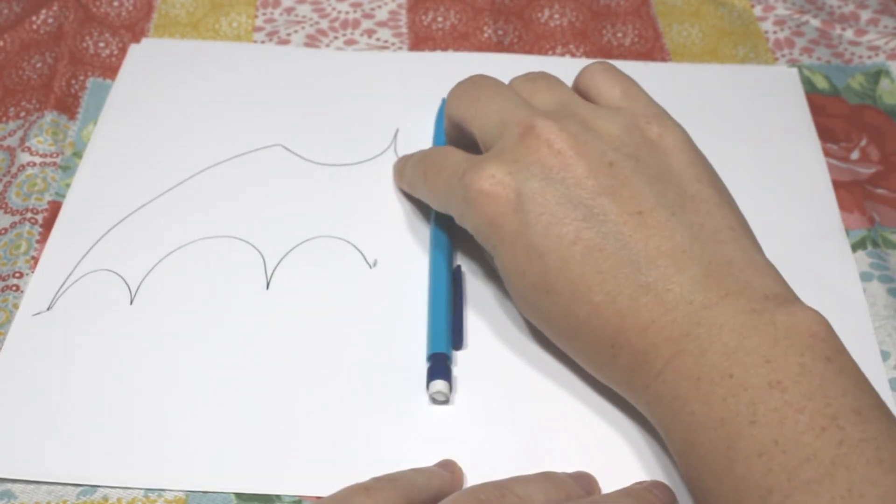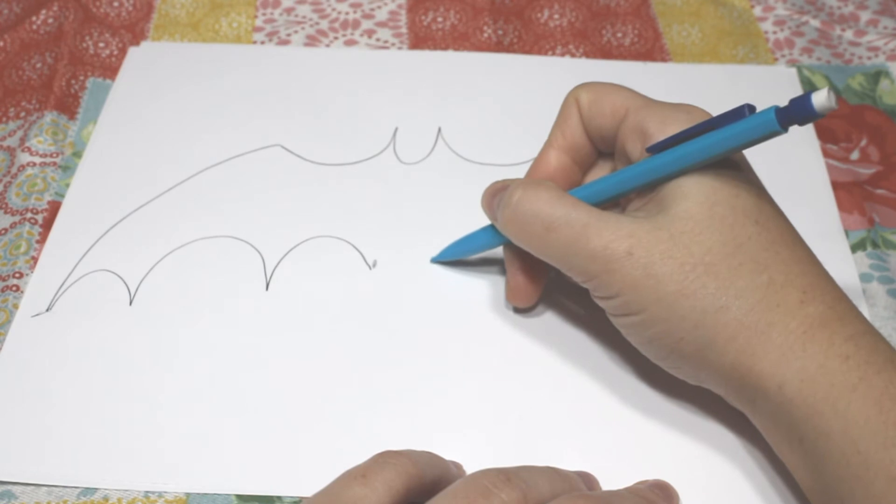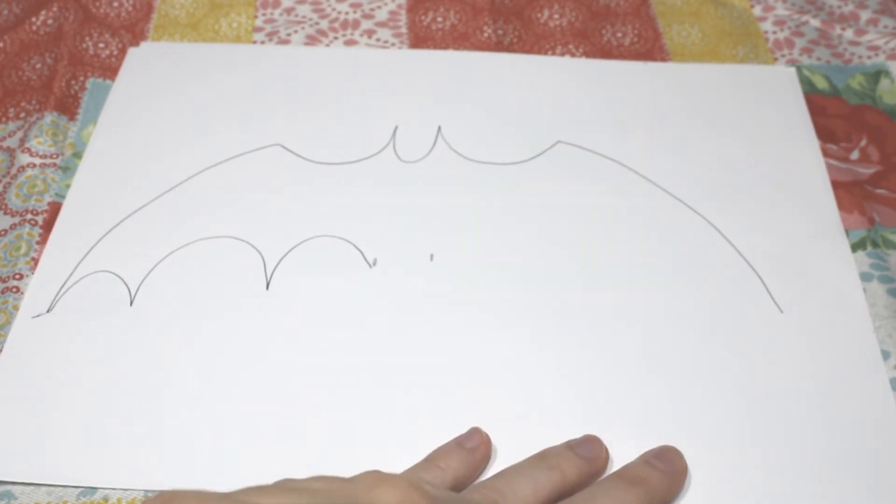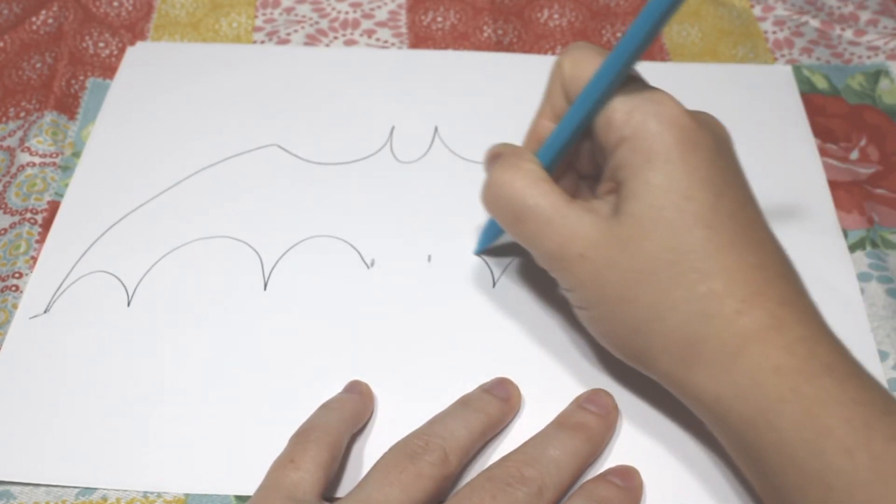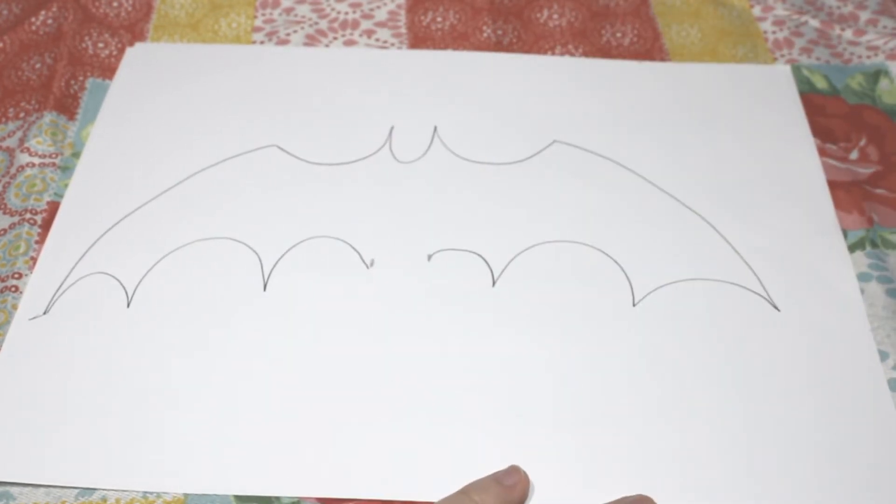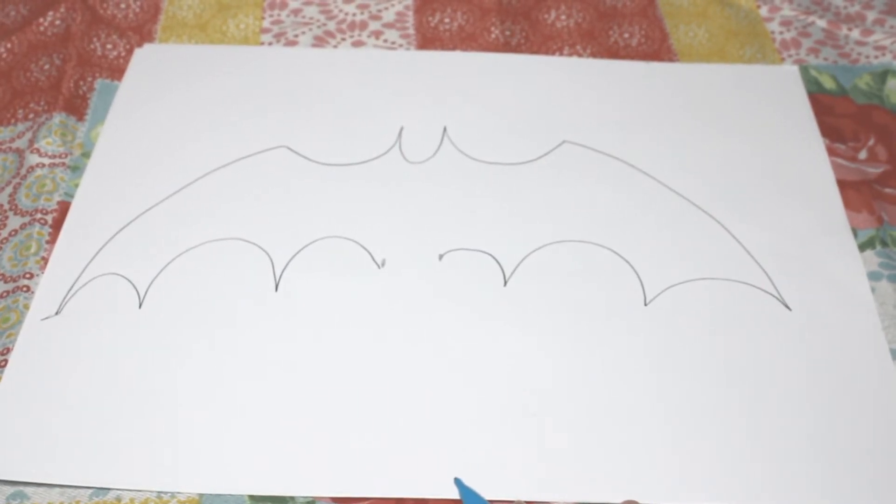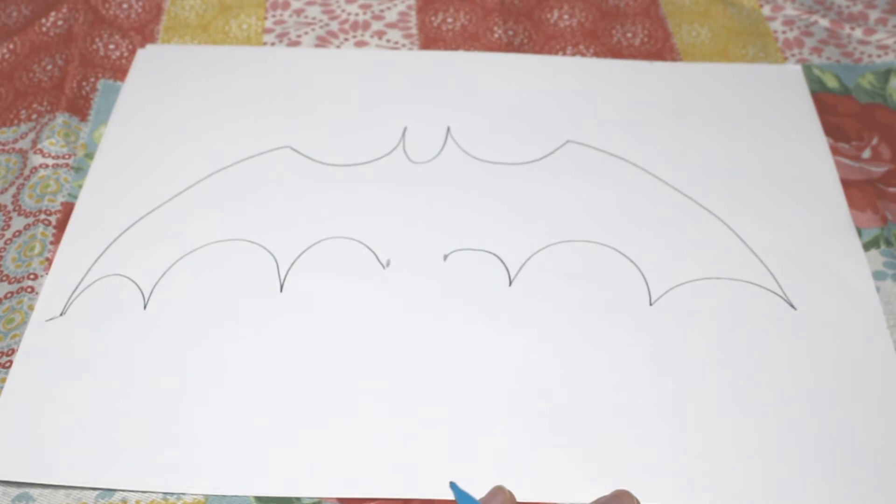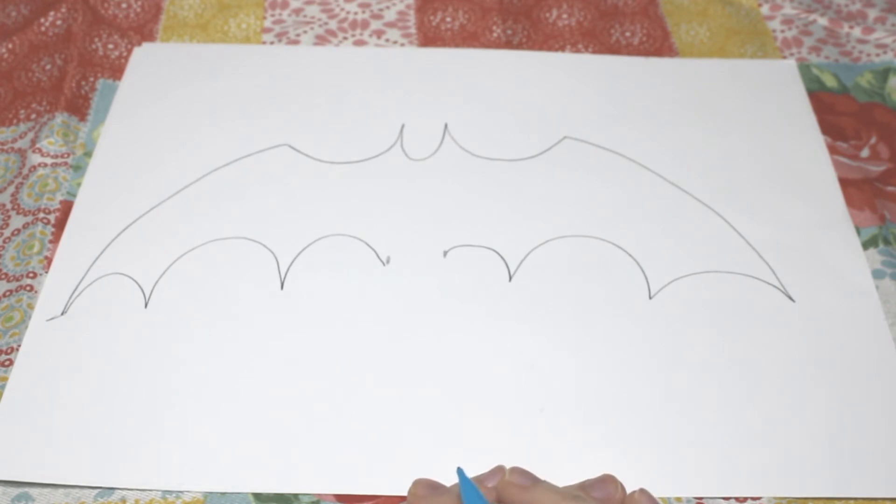Same thing on this side, so look at where that pointy is. Okay, right there. You can already see the bat shape, huh?